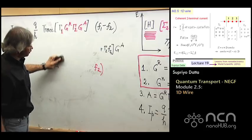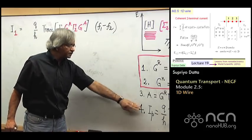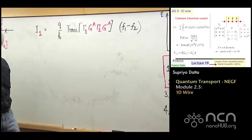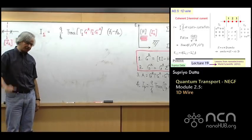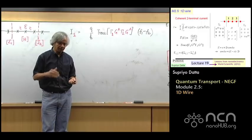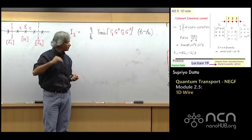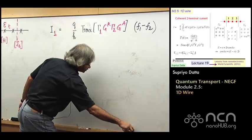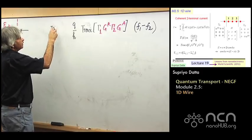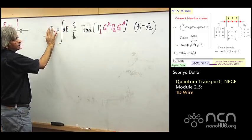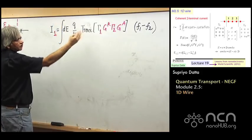So this is the different form that I was talking about. You have the current as given by trace of this quantity times F1 minus F2, Q over H. And again, it's not a new result. What we did was took our basic current equation and did some algebra using the relations appropriate for a coherent two-terminal device. Now one point I should stress here is that this is current per unit energy because we are just writing the current at a given energy, at a fixed energy level.